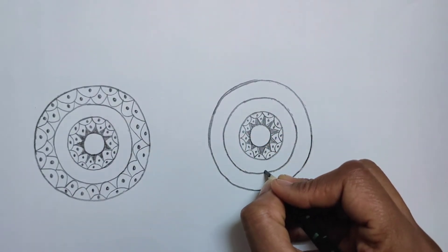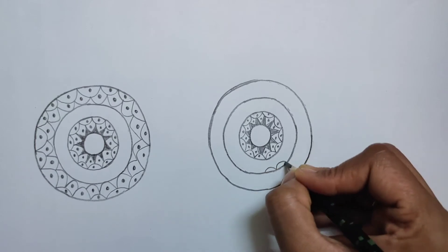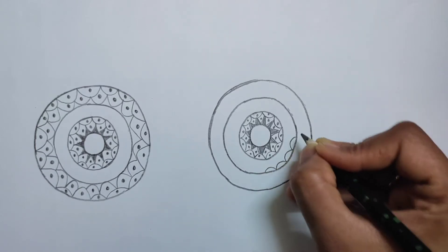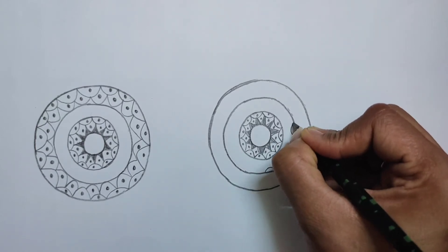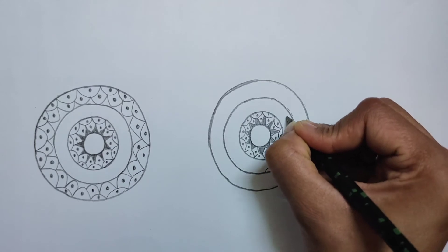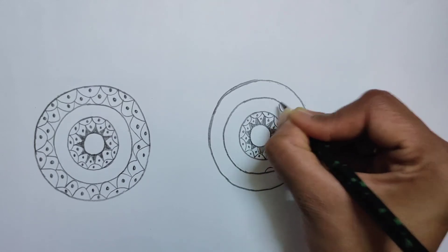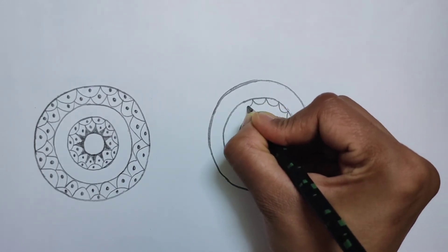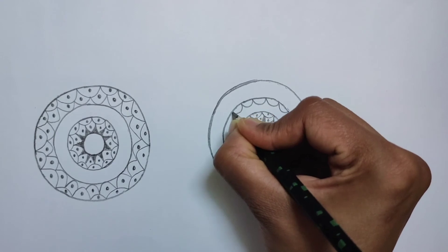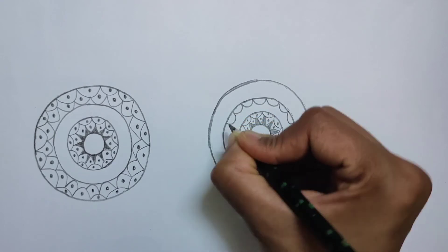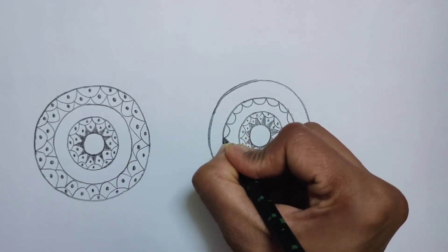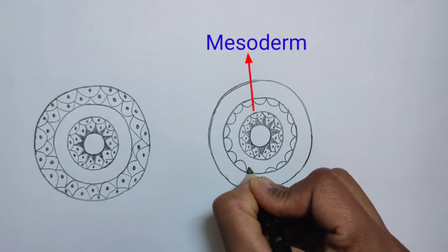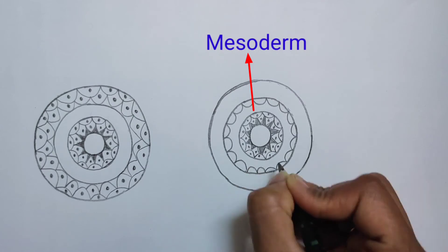The diagram of the diploblastic layer and triploblastic layer is very much similar. The only thing we need to remember is that when we are drawing the triploblastic layer, we need to draw the cells of the mesodermal layer, which I am showing in the figure now.